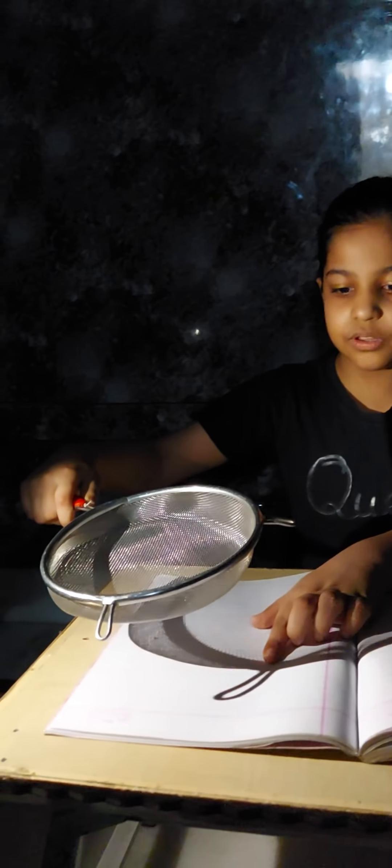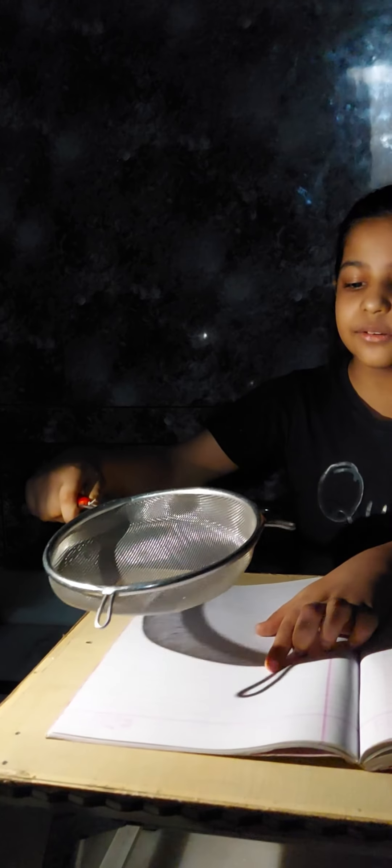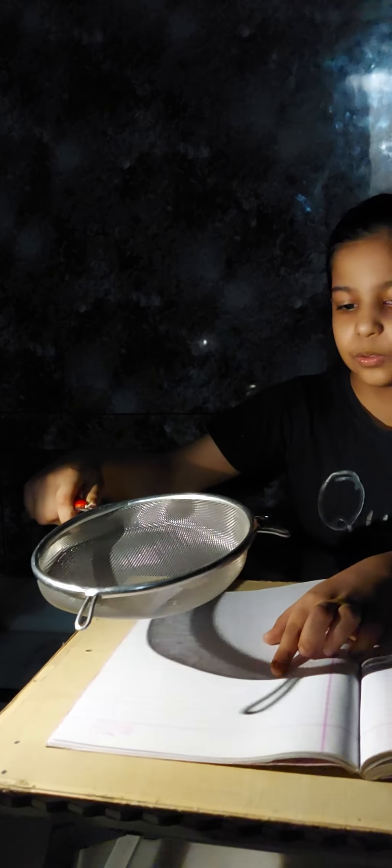Now, you can see that it has holes. So, there is no shadow. The hole allows the light to pass.